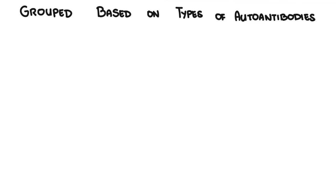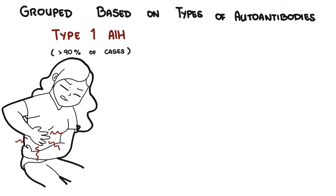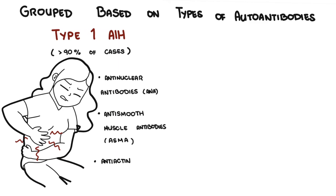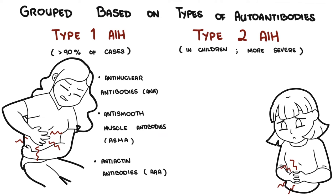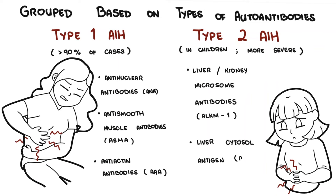People with autoimmune hepatitis are divided into two main types based on these autoantibodies. Type 1 is responsible for over 90% of cases, with classic autoantibodies including anti-nuclear antibodies (ANA), anti-smooth muscle antibodies (ASMA), and anti-actin antibodies (AAA). Type 2 autoimmune hepatitis mainly affects children and is generally a more severe form of the disease, with autoantibodies against liver kidney microsomes (LKM1), alone or accompanied by liver cytosol antigen (LC1).